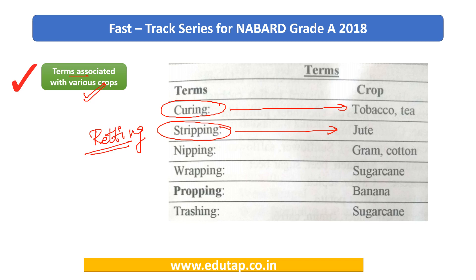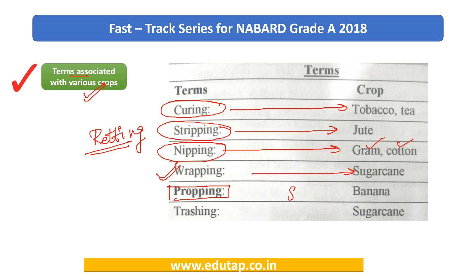Then we have nipping, which is common for gram plants and cotton. Then we have wrapping for sugarcane. Then there is propping, which is applicable for sugarcane as well as banana. Then we have trashing, which is again applicable to sugarcane. So kindly make the additions I've told you: retting is associated with jute and propping is associated with both sugarcane and banana.